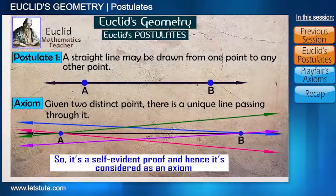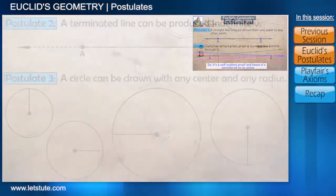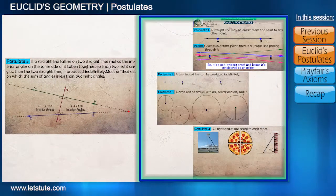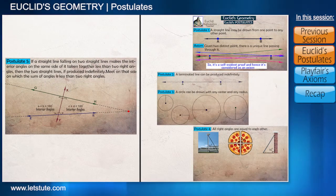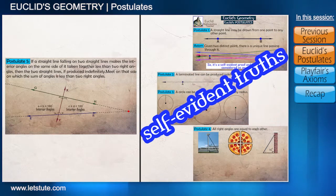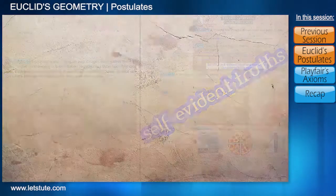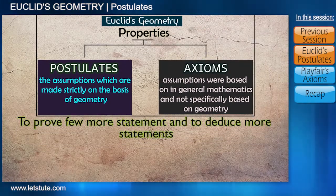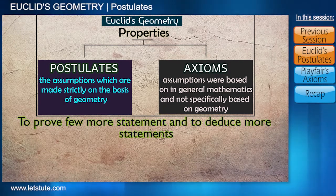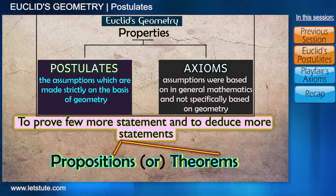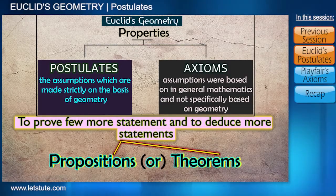We can see that postulates 1 through 4 are very easy to understand when compared to postulate number 5. These four postulates are so simple and obvious that they are considered as self-evident truths. Euclid used these postulates and axioms to prove and deduce more statements — these statements are called propositions or theorems.